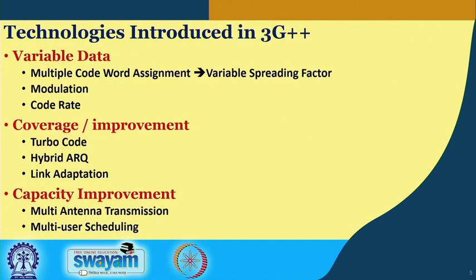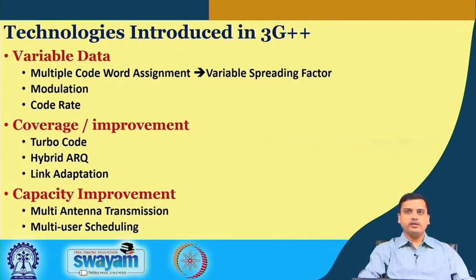Beyond 3G — sometimes referred to as 3.5G and 3.9G — some important things that came into play were variable data rates, supported by means of multiple code word assignments or a variable spreading factor. Since CDMA technology uses a spreading mechanism, one could allocate multiple code words to a user or use a variable spreading factor. As the spreading factor changes, the data rate supported would also change, thereby enabling a variable data rate.